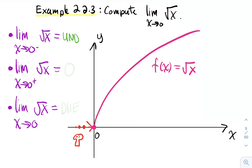On the right side, approaching zero from the right, the function approaches zero. So the right limit is zero. Comparing left and right: the left limit is undefined and the right limit is zero — they're not the same — so the two-sided limit does not exist. That's it for sections 2.1, 2.2, and 2.3: left-sided limits, right-sided limits, two-sided limits, limits going to infinity, and the distinction between UND and zero.